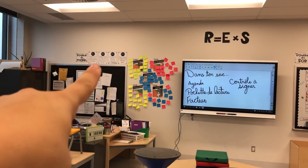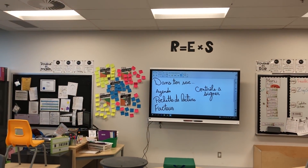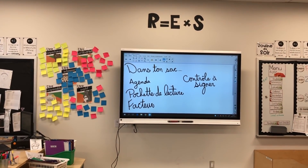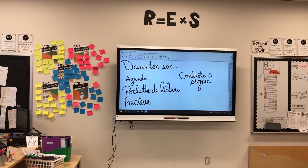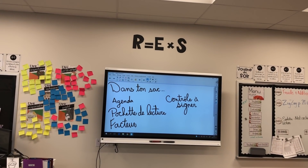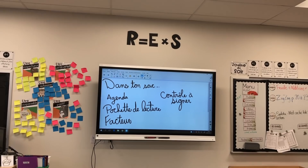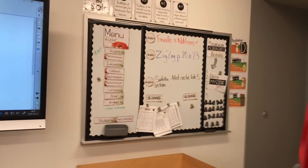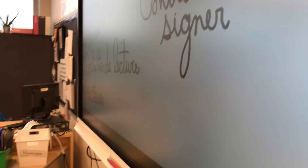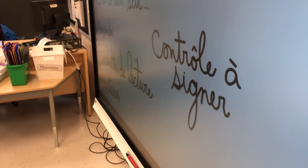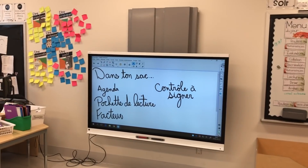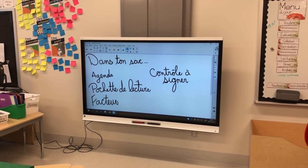La vente — le devant de ma classe — ressemble à ça. J'ai la routine du matin affichée en haut. Il y a l'activité des valeurs faite en début d'année : les 5 valeurs de la classe avec des post-its représentant des façons concrètes que ces valeurs se manifestent dans la classe. J'ai l'équation de la réussite de Steve Bissonnette, que je n'ai pas encore expliquée puisque je n'ai pas abordé la multiplication. Mon tableau en avant à droite du TNI peut monter et descendre — je peux le descendre très bas pour que les plus petits élèves puissent écrire au tableau.